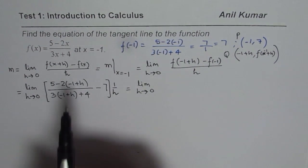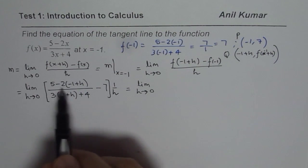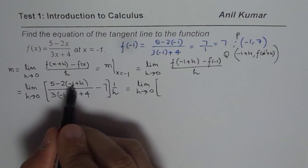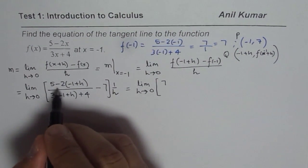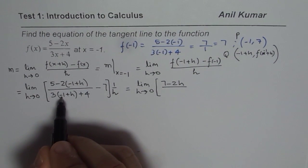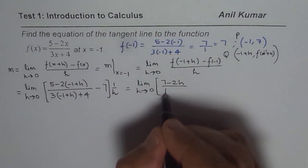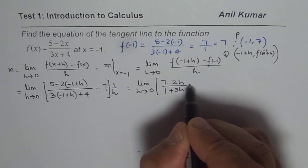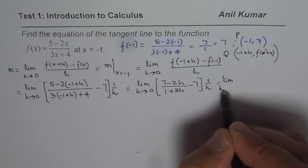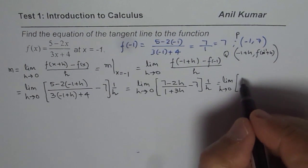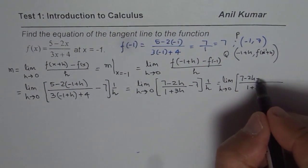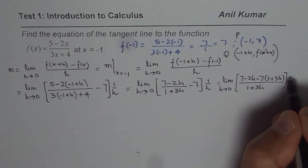Now let's simplify. Opening the brackets in the numerator: 5 - 2(-1) gives 5 + 2 = 7, and -2h remains, so the numerator is 7 - 2h. In the denominator: 3(-1) = -3, plus 4 = 1, plus 3h, so the denominator is 1 + 3h. We now have [(7 - 2h)/(1 + 3h) - 7] times 1/h. We take the common denominator (1 + 3h) and multiply through: (7 - 2h - 7(1 + 3h)) times 1/h.